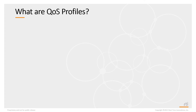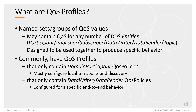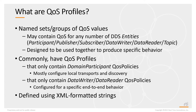A QoS profile is a named set or group of QoS values that when used together will produce a specific behavior. A QoS profile may contain QoS for any number of DDS objects. Commonly, you would have profiles containing domain participant QoS policies — configuring how the participant uses the local network and handles discovery. Another common type contains data writer and data reader QoS policies for end-to-end behavior, with multiple profiles for different end-to-end behaviors. QoS profiles are defined through XML formatted strings, which we'll look at next.